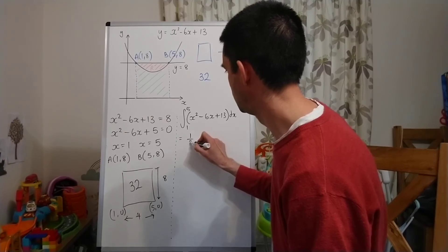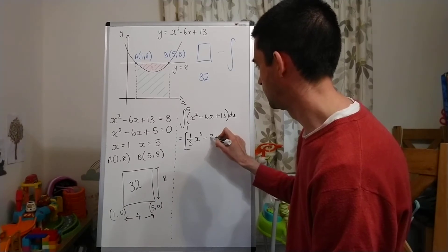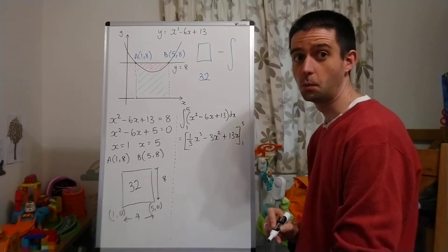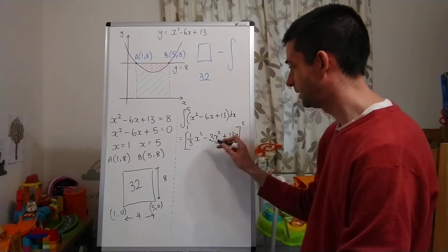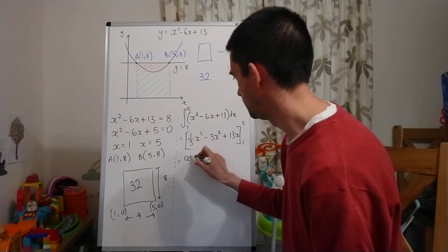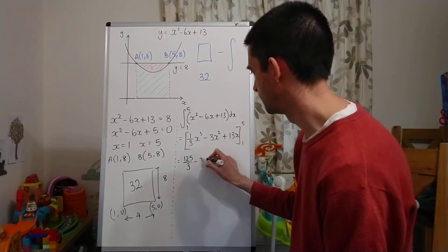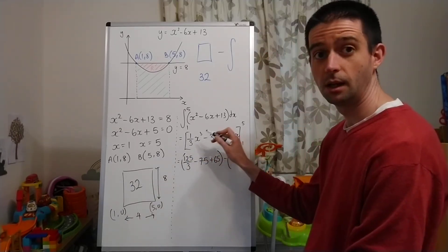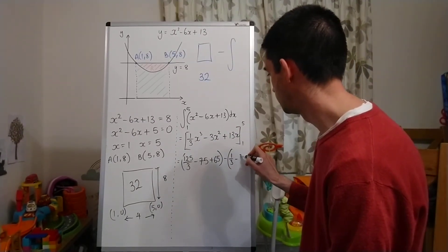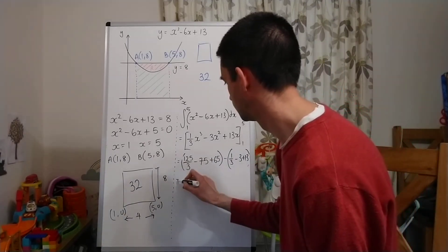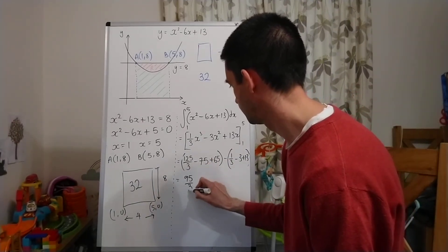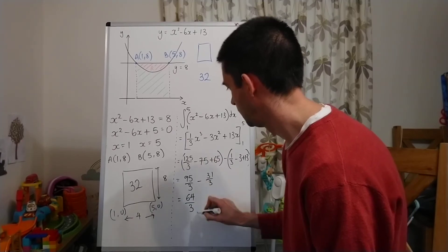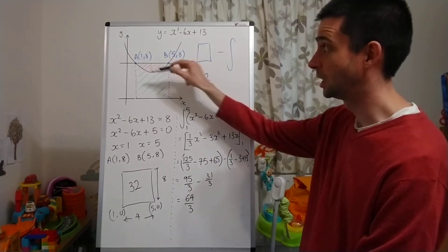x squared integrates to one third x cubed. Negative 6x integrates to minus 3x squared. And 13 integrates to 13x. That is between the limits of 5 and 1. Substituting 5 into the integral gives 125 over 3 minus 75 plus 65. Subtracting the value when I substitute 1 gives one third minus 3 plus 13. That gives 95 over 3 minus 31 over 3, which equals 64 over 3 — the area shaded green, the area between the curve and the x-axis.